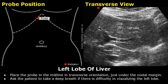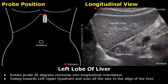This bright line is the ligamentum venosum and posterior to that is the caudate lobe. If there is difficulty in visualizing the left lobe, ask the patient to take a deep breath.